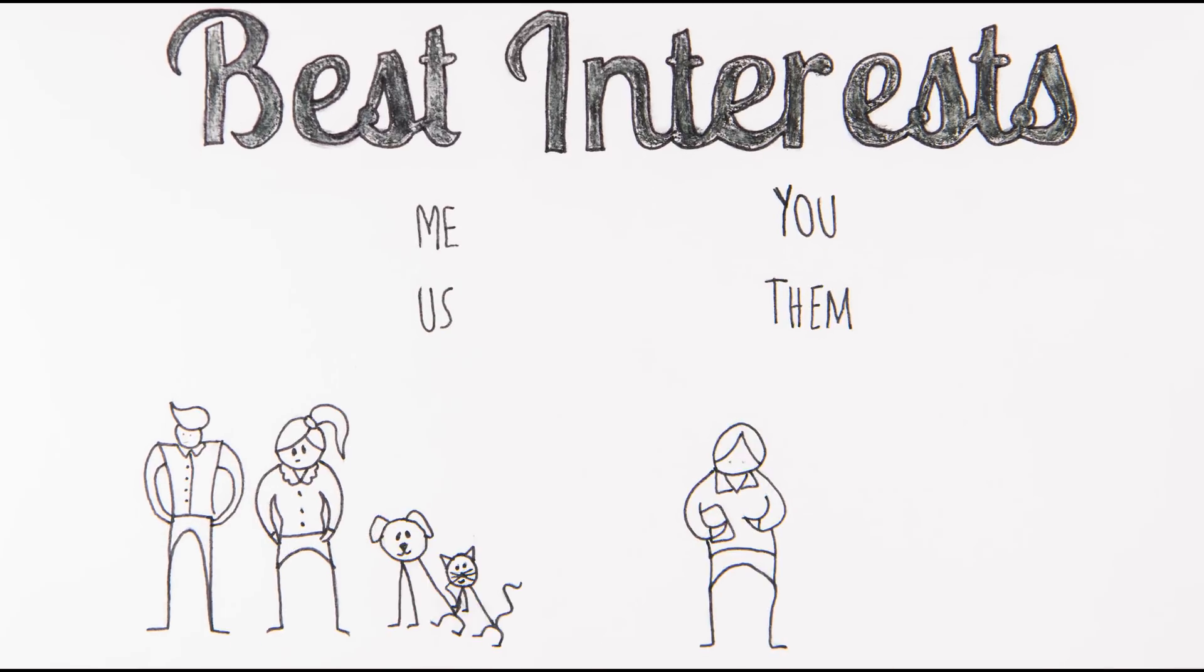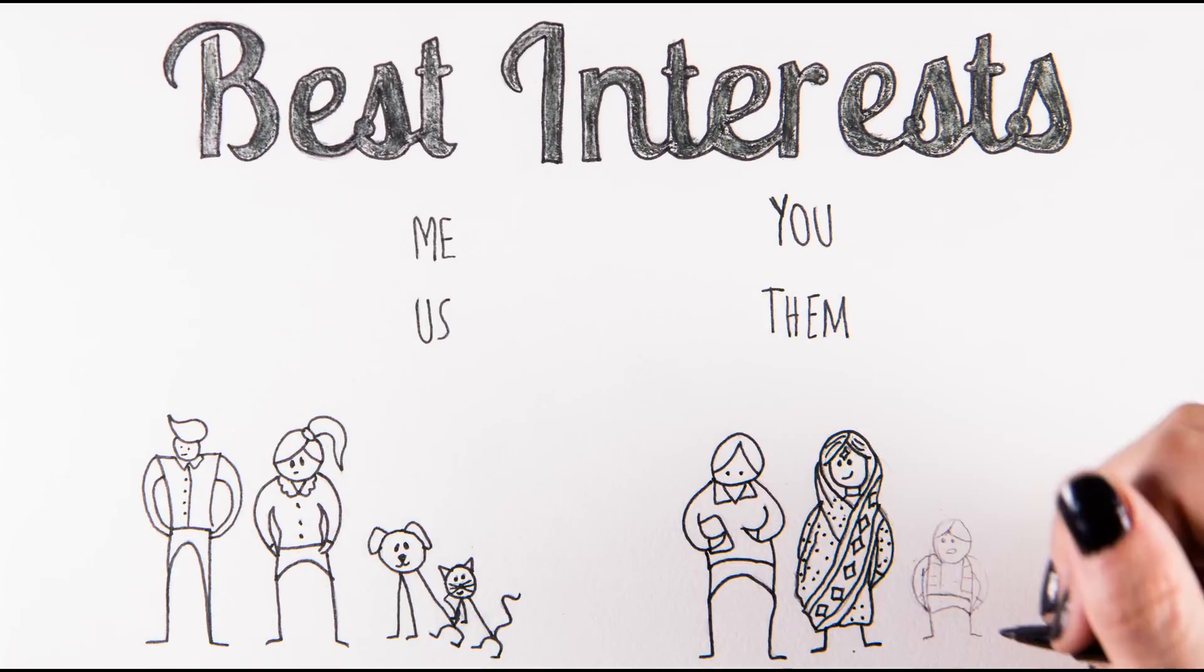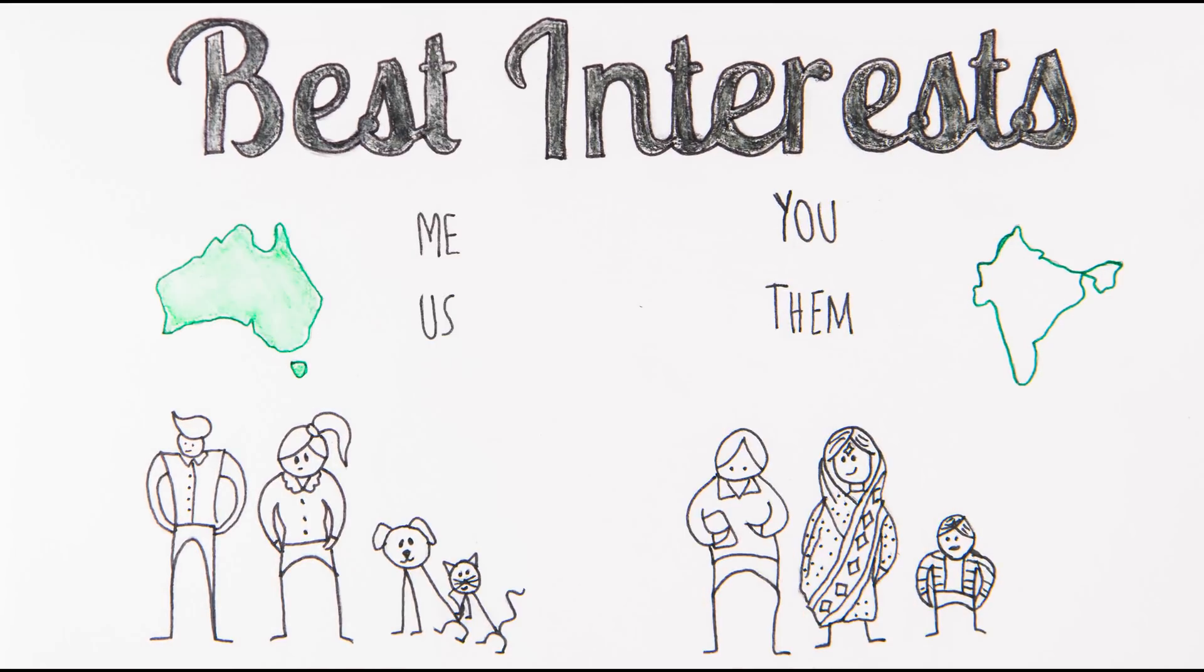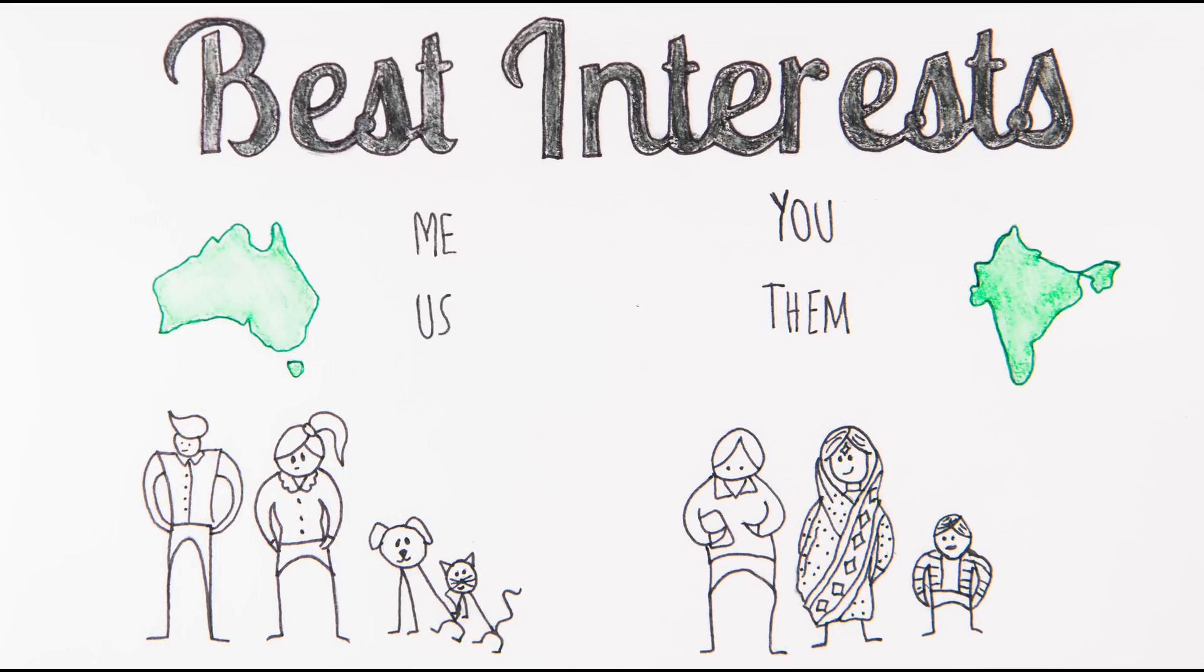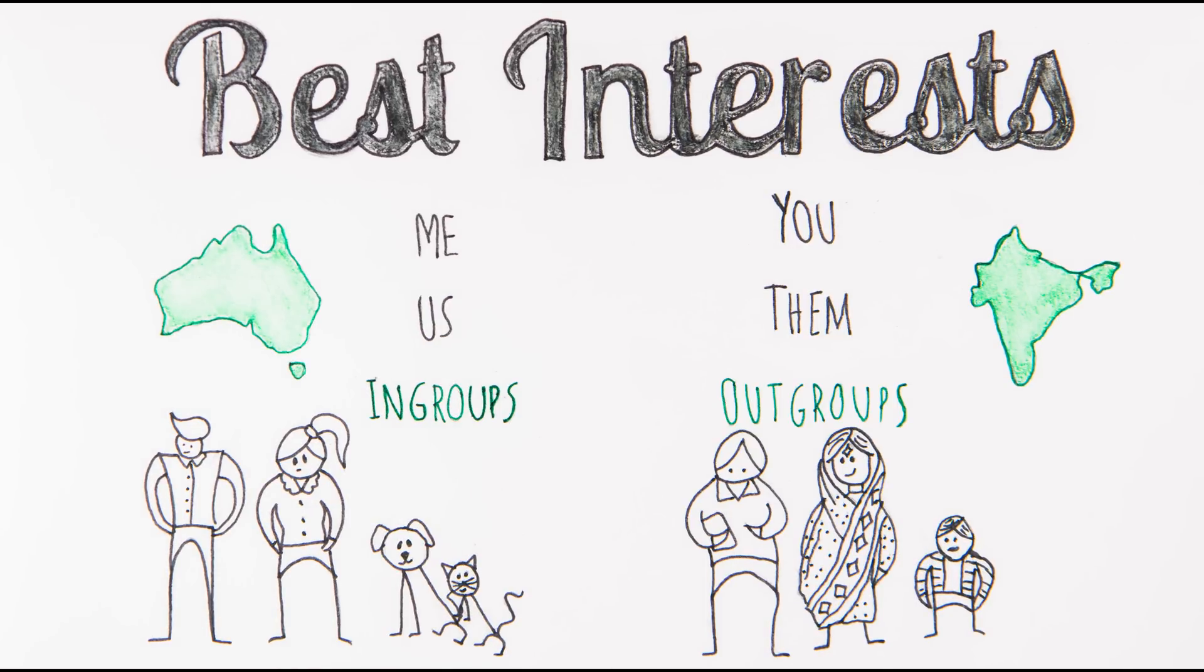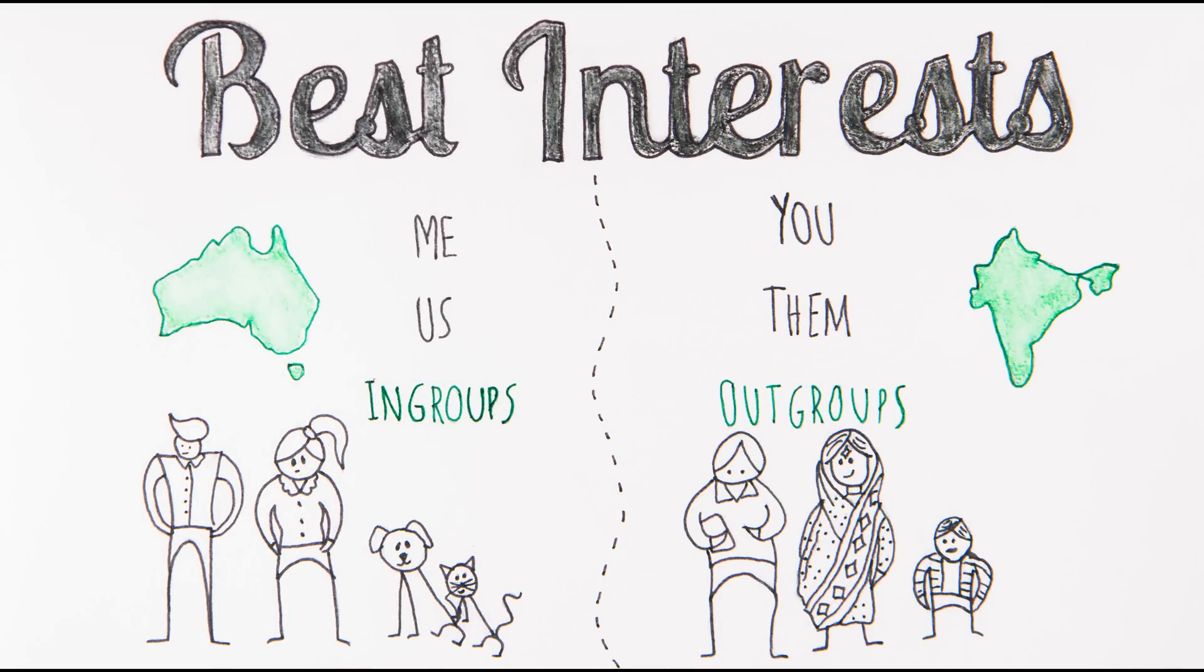How do I weigh my family's self-interests against the needs of a family I've never met? What about the citizens of my country versus citizens of another? At a number of levels, we build in-groups and out-groups. There are people with whom we most closely relate, fit, and belong, and there are people outside of that.